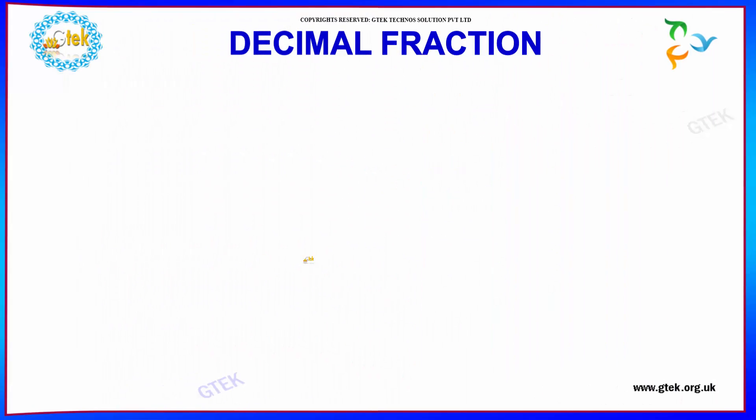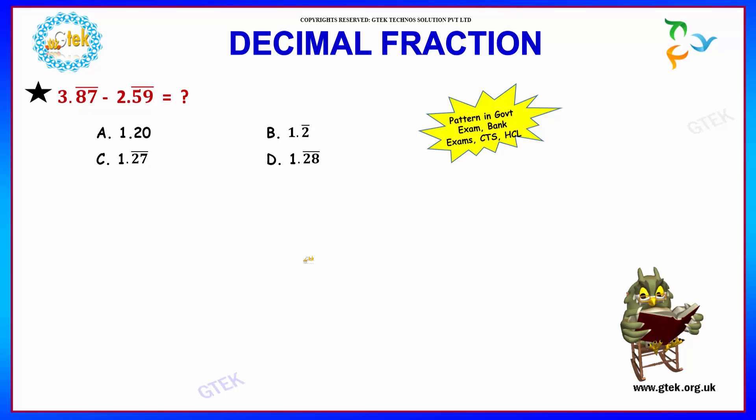Let us move on to our next interesting question. We have to find the difference between 3.8̅7̅ and 2.5̅9̅. Our options are given over here as 1.20, 1.2̅, 1.27̅ and 1.28̅.